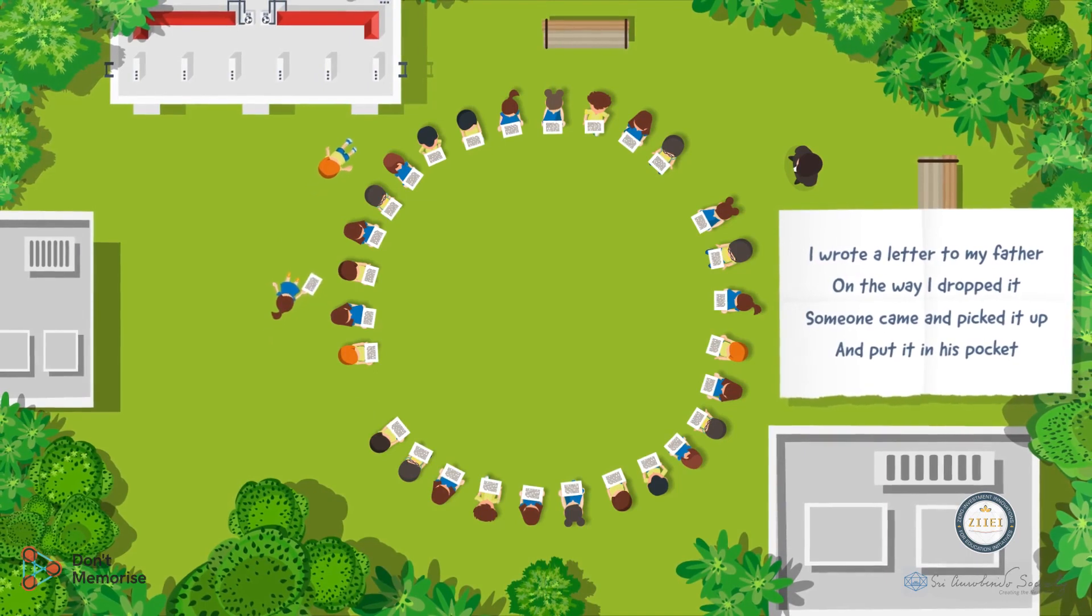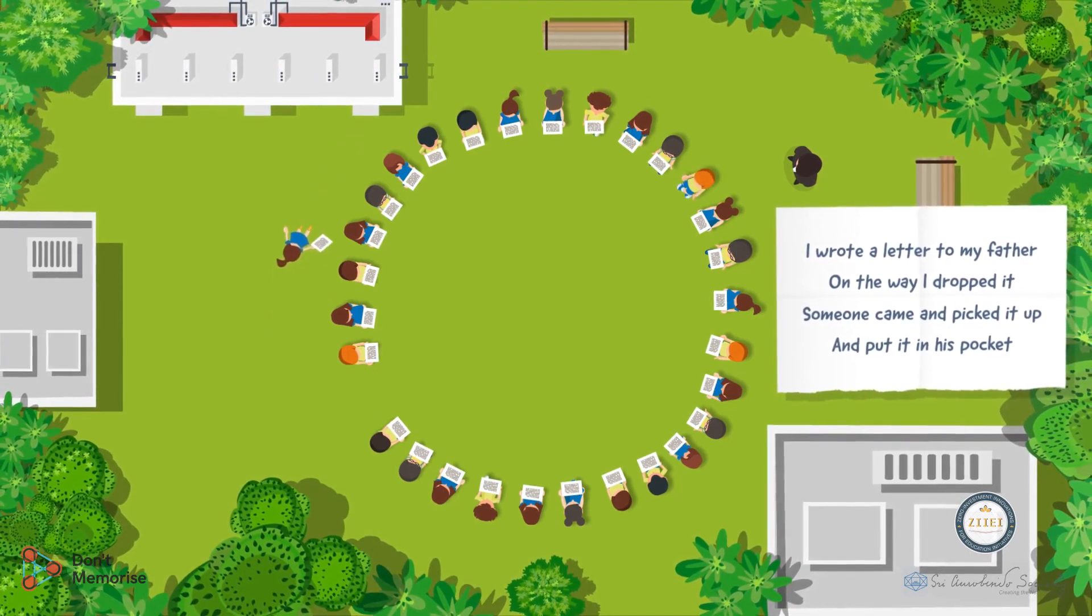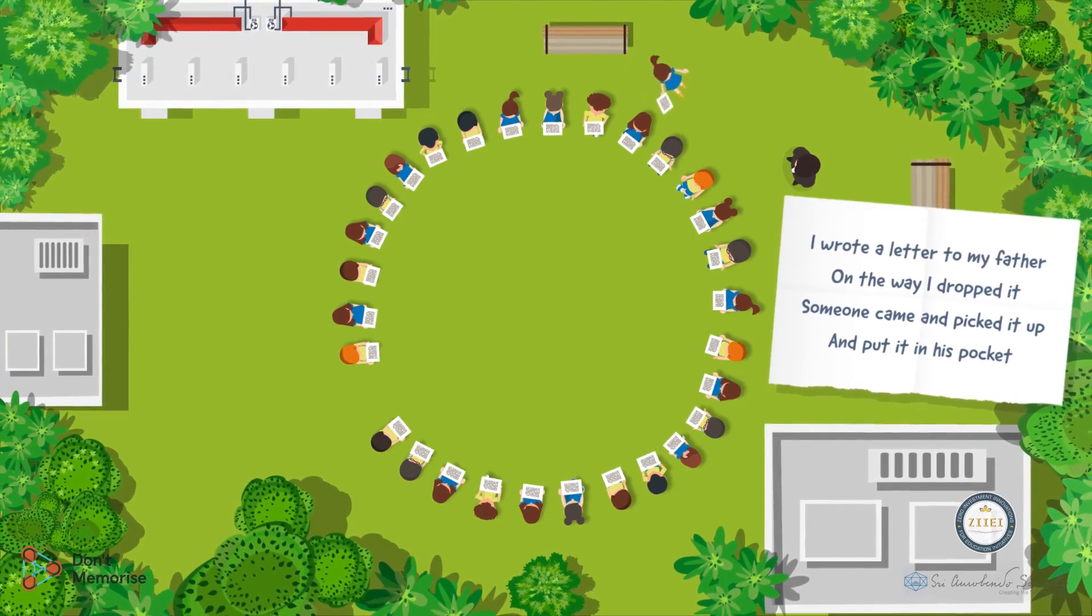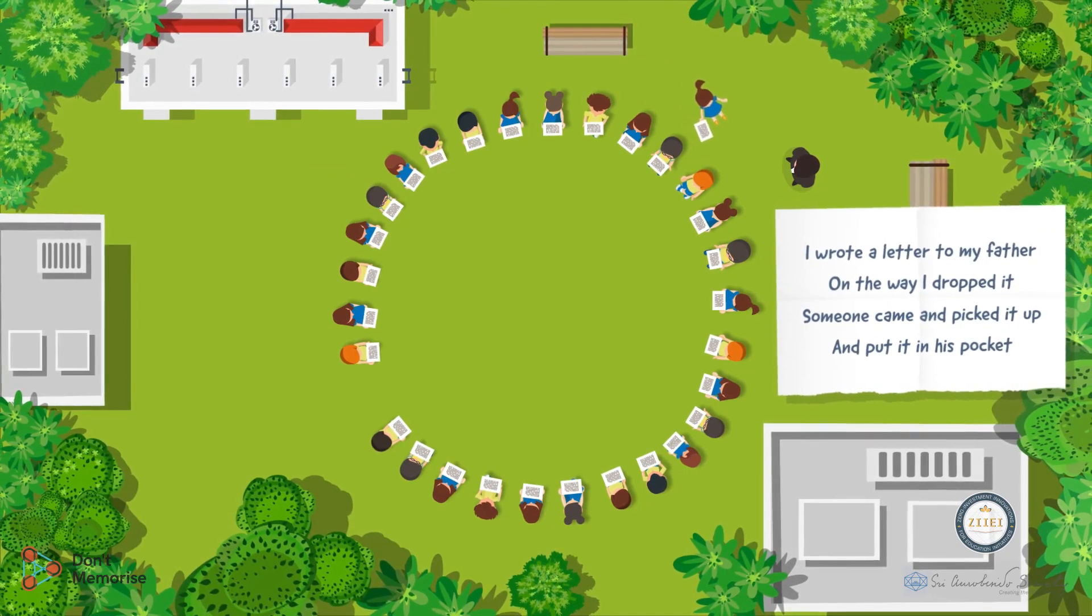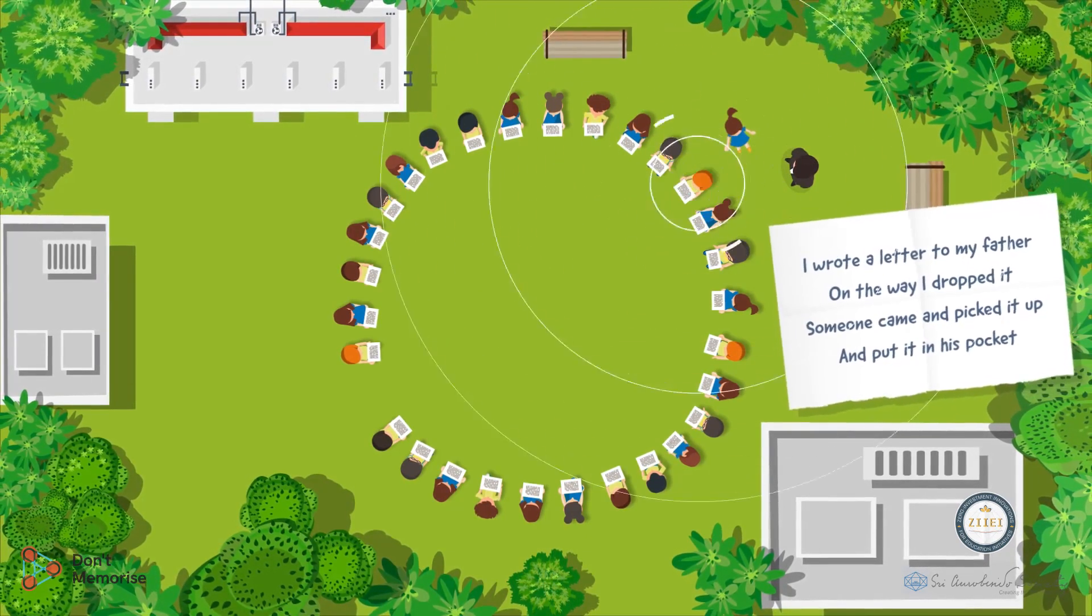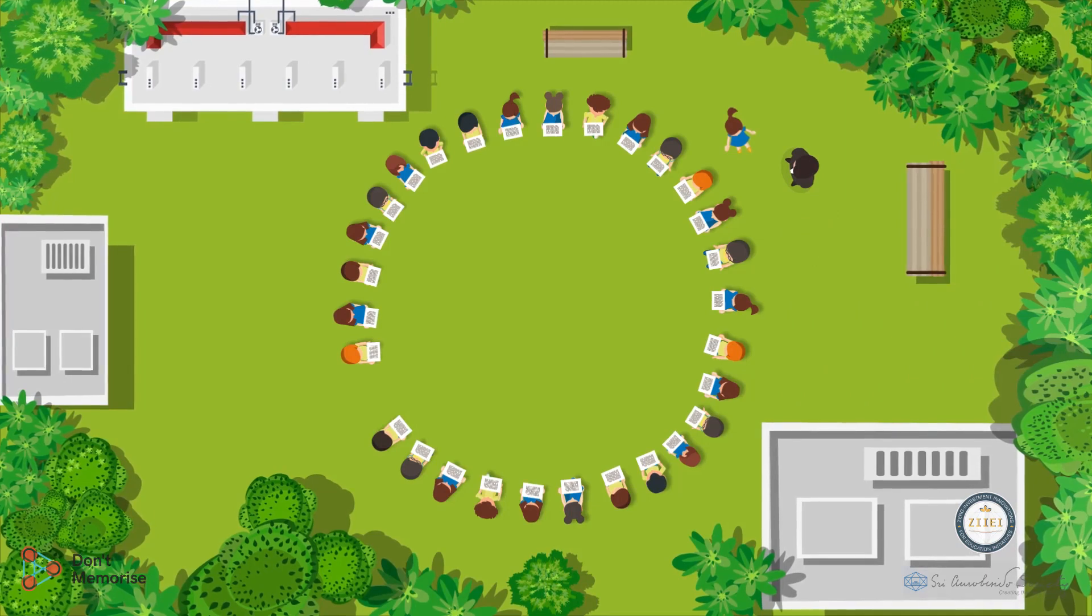The first student will run and sit in the position he or she had vacated initially. The second student will then proceed to hand the letter over to the first student. Once the second student hands over the letter to the first student, he will repeat the game using his own letter.